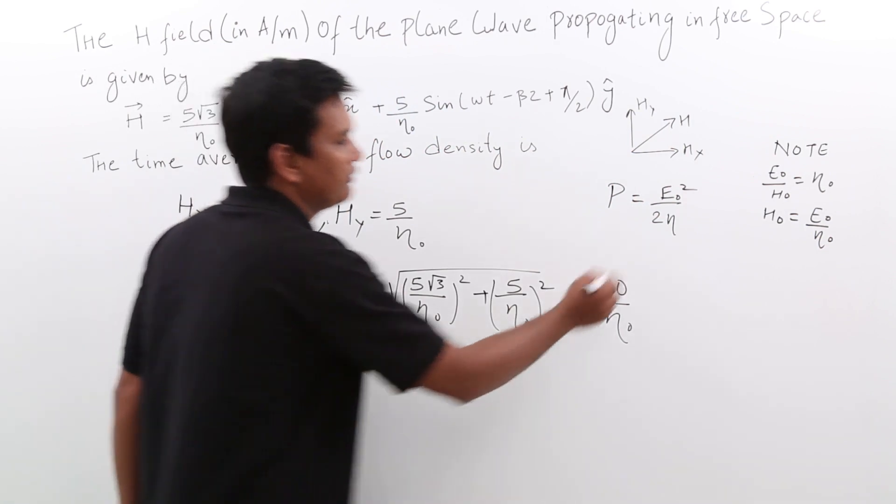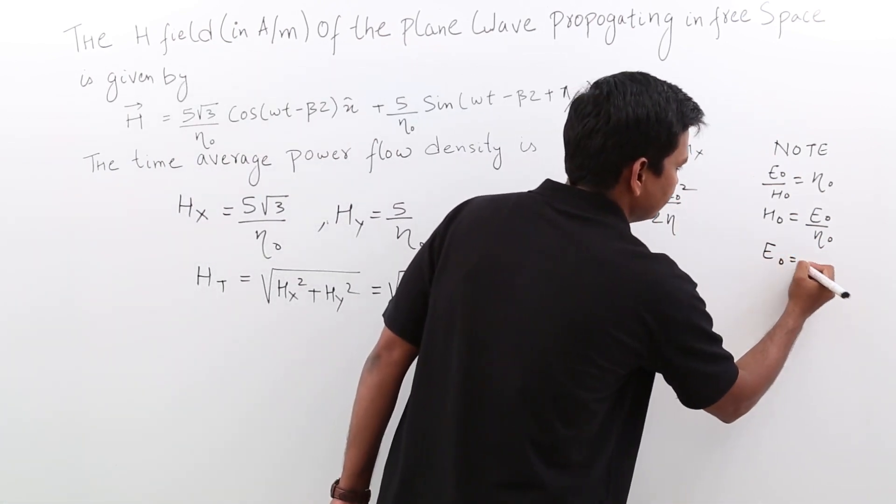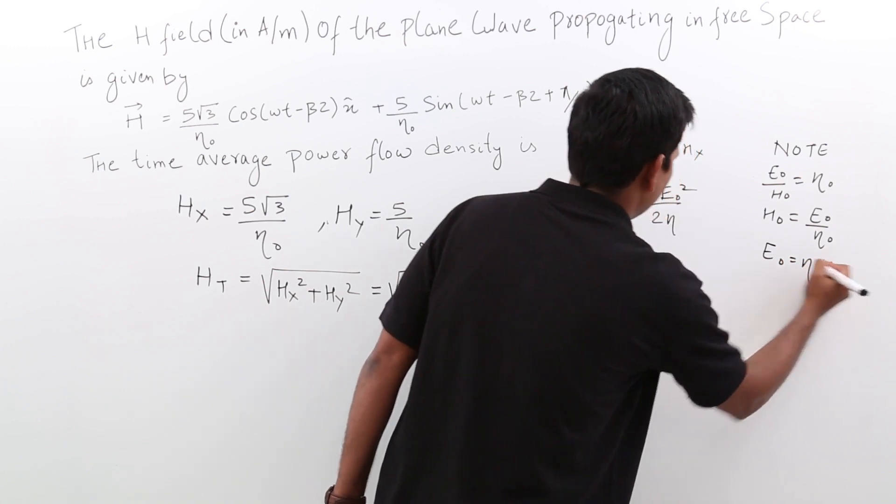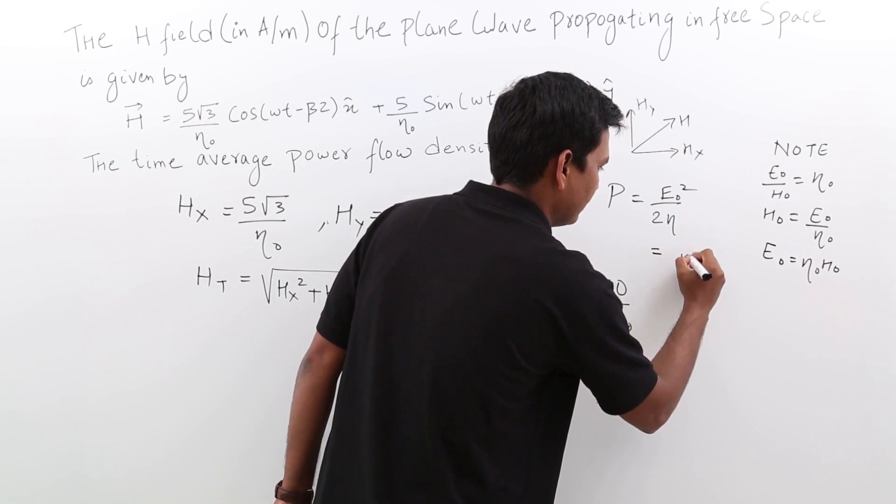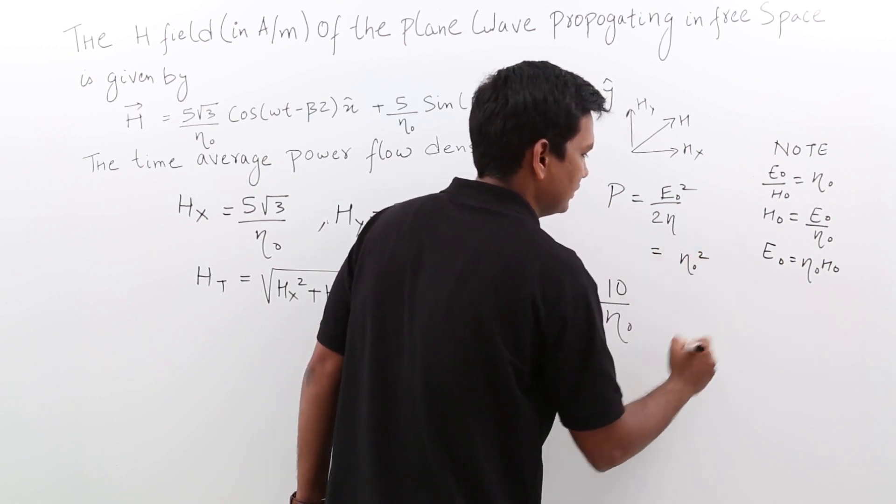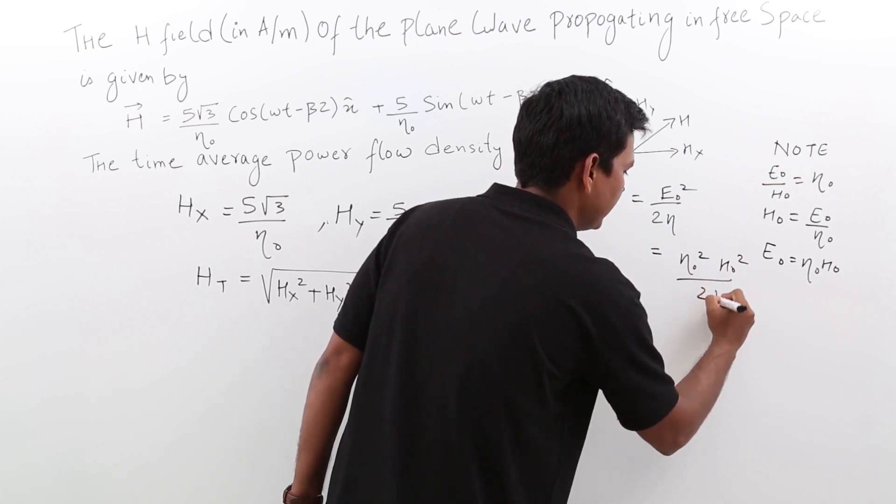But we have to substitute the E naught value. So E naught value would be N naught H naught. If I do so, this formula will become N naught square H naught square by 2 eta.